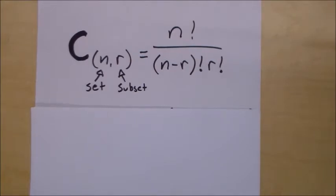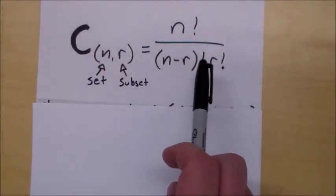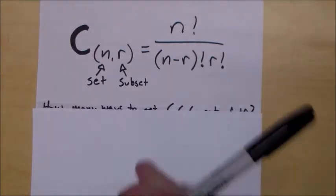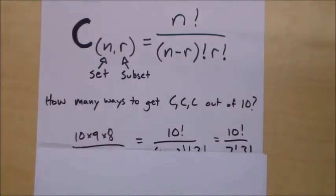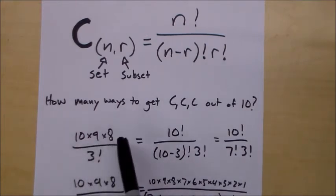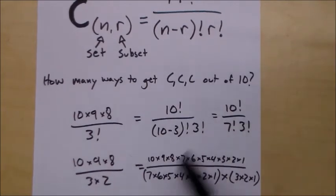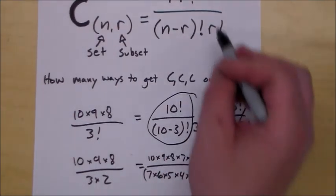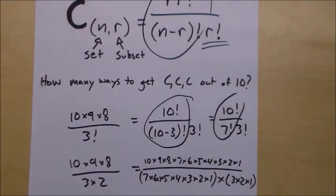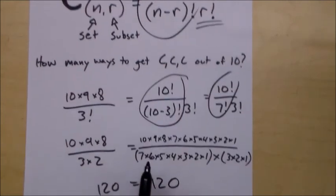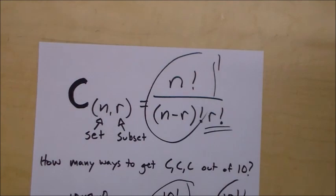Same thing for combinations. The notation is C(n, r) = n! / ((n−r)! × r!). It's the same as permutations but with an extra r factorial, because you have to divide out the number of sames. For 3 committee members from 10 students: 10 × 9 × 8 divided by 3 factorial equals 120. Or formally: 10! / (7! × 3!) — same answer. I think the simple way is easier, but now you know what the formal notation looks like.